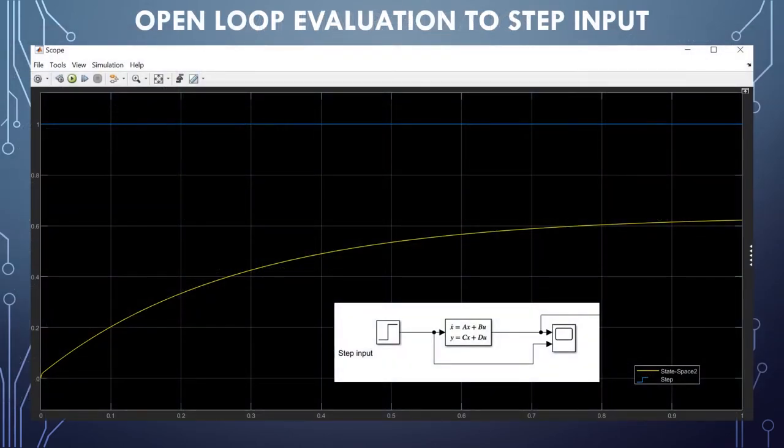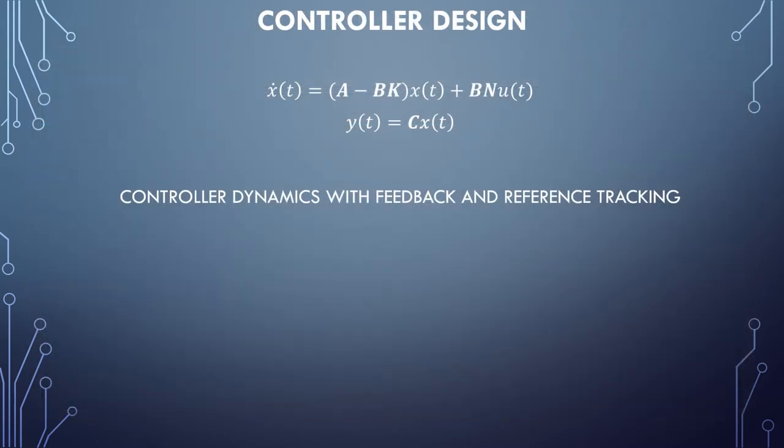Here we have the Simulink model of the open loop system and its response to a step input. This line represents the input to the system and this one the output. As you can see, the system's response slowly makes its way to an asymptote that falls well short of the input signal. To adjust the response of the system, we design a controller. Shown here are the dynamics for a state space system with both feedback and reference tracking. The significance of each will become a little more apparent in a moment when we review the system response.